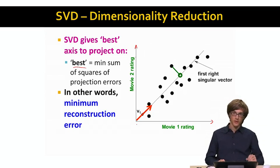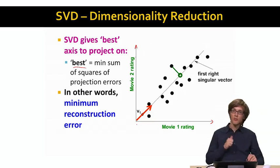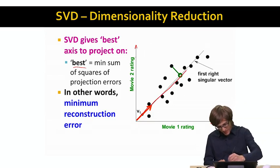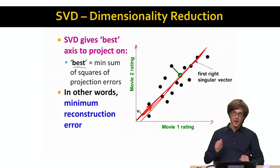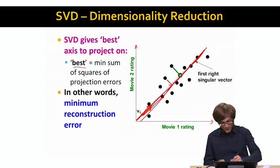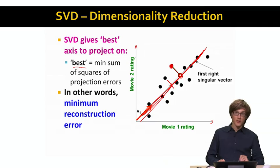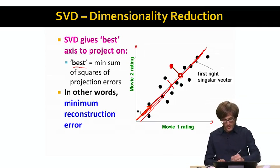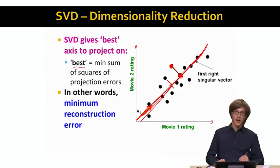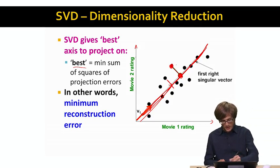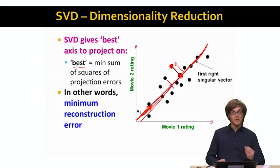Assume that our data lies in this kind of shape. If we are only given one coordinate to represent this data — not two coordinates, but just one — what is the best axis along which to represent it? In this case, this would be the best axis. Every data point can be represented as a single number, which is simply the projection of that data point onto this line. The red data point would project to this particular location on the line, and the goal is that the sum of squared errors between the true position and the position along the line should be minimal.